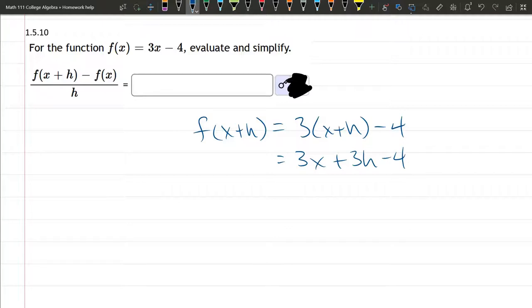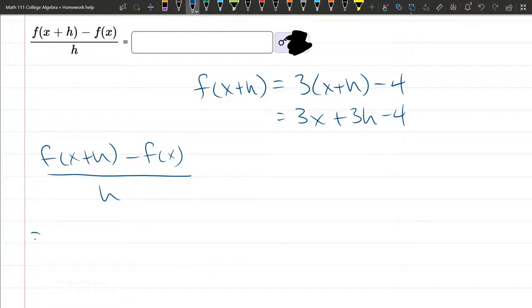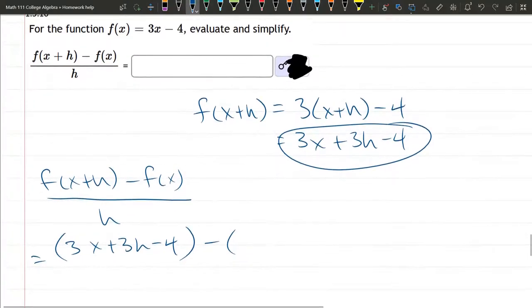Now we're ready for the difference quotient. I'll start by just writing it out. Now we will plug in the values here. So f of x plus h right there, minus f of x is 3x minus 4.